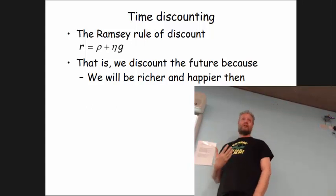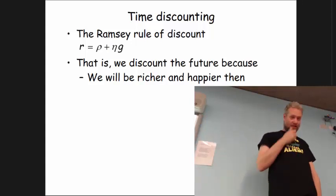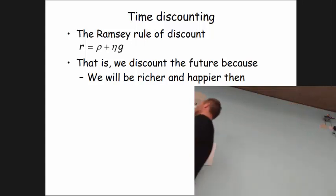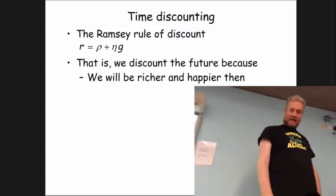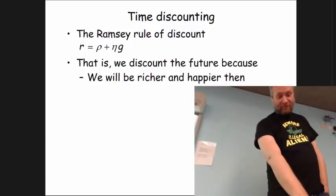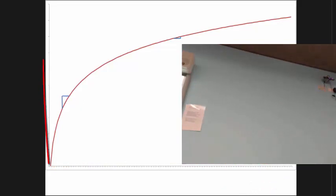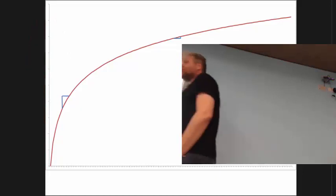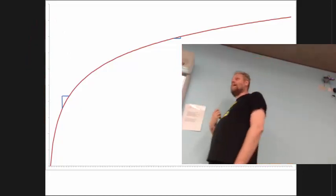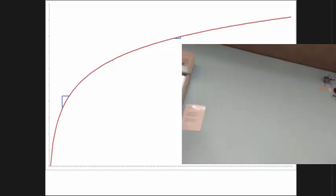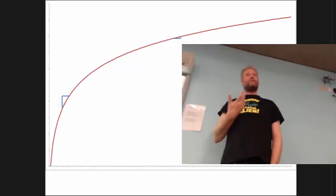First, we expect to be richer and happier in the future. The way this part of the Ramsey rule works is best seen graphically. If you save today — this is consumption, this is your annual income, this is how happy you are, and this is your utility function — when you put 100 pounds aside this year, you get poorer because you give up that income, and as a result you get less happy.